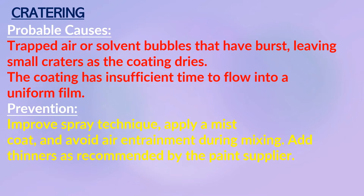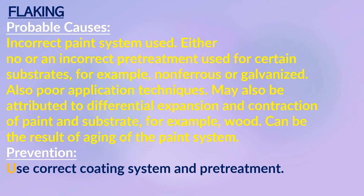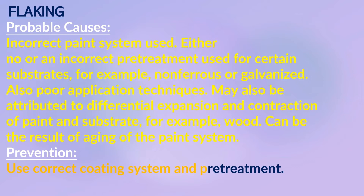Flaking: a form of adhesion failure where the paint flakes from the substrate, seen on wood substrates and on galvanizing. Probable causes: incorrect paint system used, either no or an incorrect pre-treatment used for certain substrates such as non-ferrous or galvanized surfaces; also poor application techniques. May also be attributed to differential expansion and contraction of paint and substrate, for example on wood, or as a result of aging of the paint system. Prevention: use the correct coating system and pre-treatment.